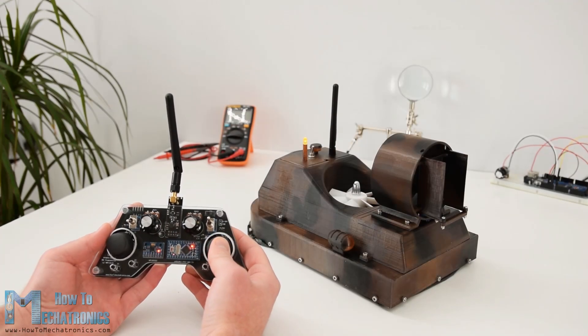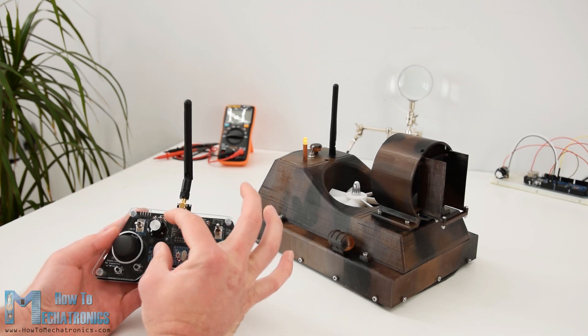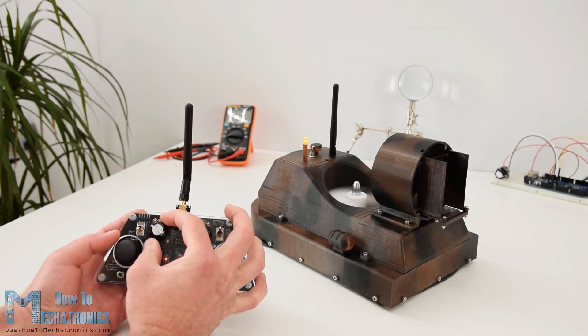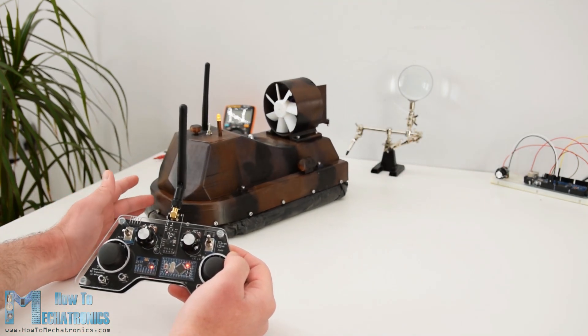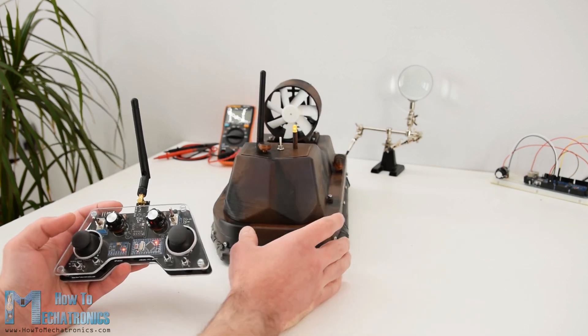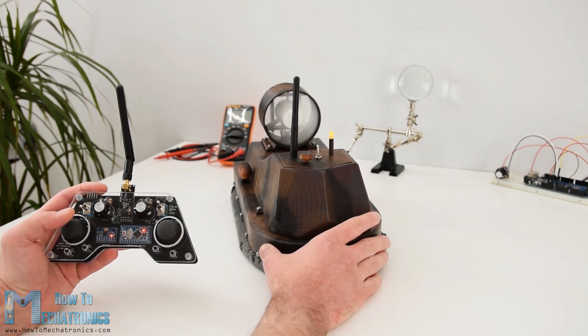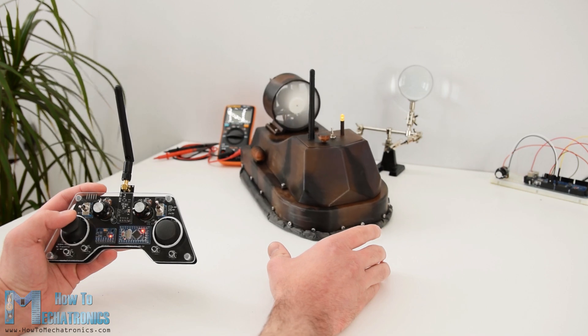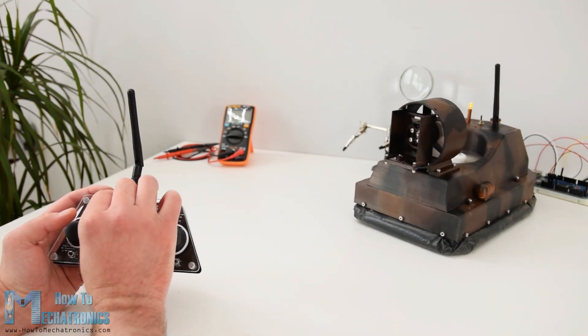For controlling the hovercraft I used my DIY Arduino-based RC transmitter, which I made in one of my previous videos. I set the right joystick to control the servo motor for positioning the rudders on the back side of the thrust motor, set one of the potentiometers to control the lift propeller, which is attached to a brushless DC motor, and set the left joystick to control the propulsion. So let's take a look at what it takes to build this RC hovercraft.